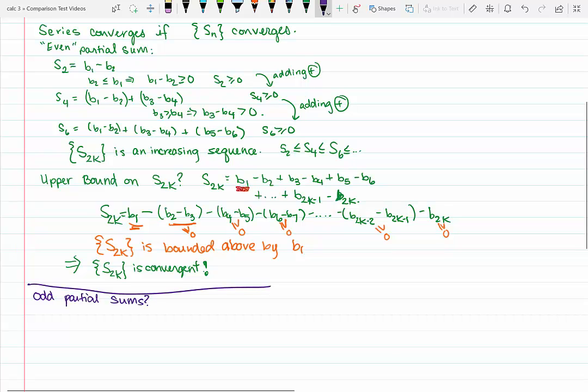Notice that the 2k plus first partial sum is the even one plus the next term in the sequence, so B sub 2k plus 1.